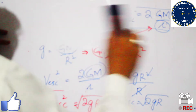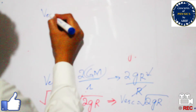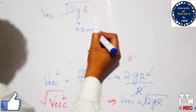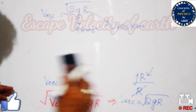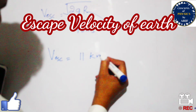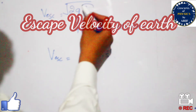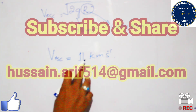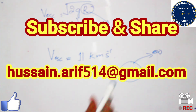This is the final expression for escape velocity. Substituting the known values — g = 9.8 m/s² and R = 6400 km — the escape velocity for earth is 11 km/s. If the radius changes, the escape velocity changes accordingly. A body launched at 11 km/s will escape earth's gravitational field and reach an infinite point.